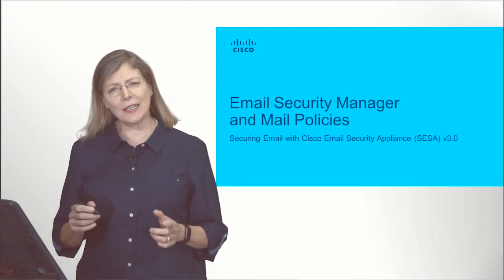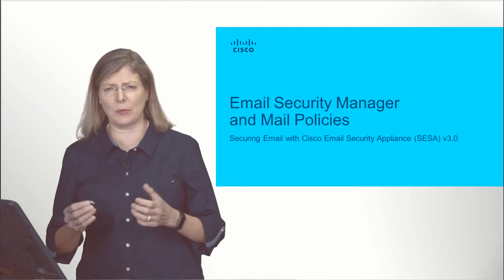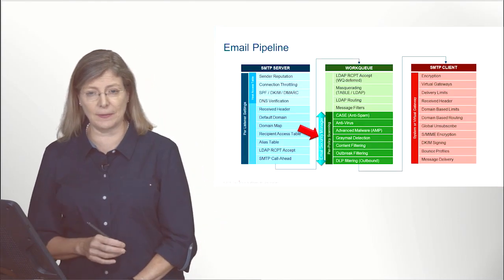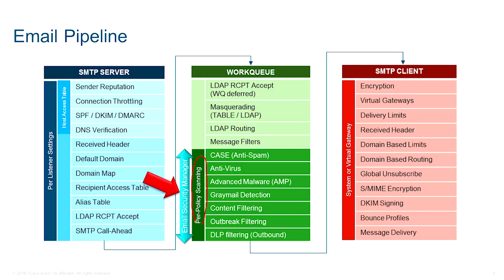Hi, I'm Catherine Paquet. Let's continue talking about the Cisco Email Security Appliance. This time we will talk about what we call the Email Security Manager and the mail policies, focusing on what you might have noticed since the beginning of recording — per-policy scanning. The Email Security Manager refers to that bottom half of your work queue where the heavy lifting is done in terms of security: anti-spam, antivirus, AMP, and content filtering.